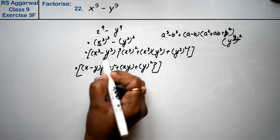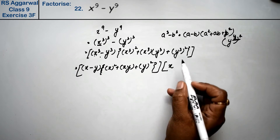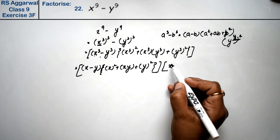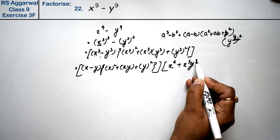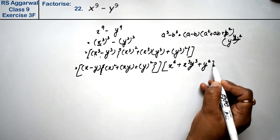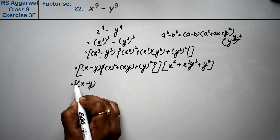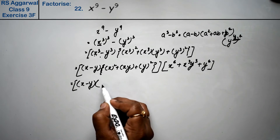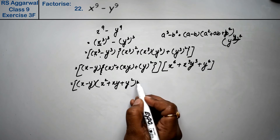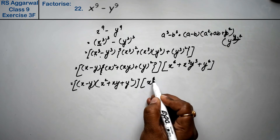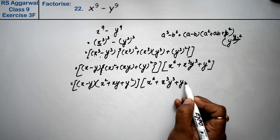We have solved the first bracket. Let's solve the second bracket. x cube squared means x power 6, plus x cube y cube, plus y power 6. So this is x minus y in one bracket, times x square plus xy plus y square in another bracket.